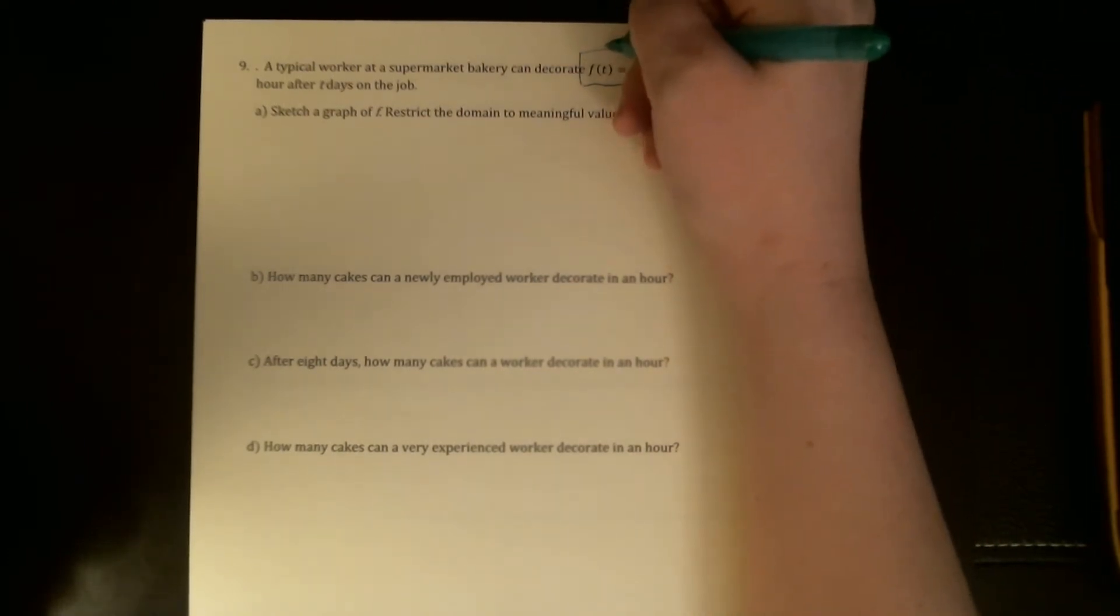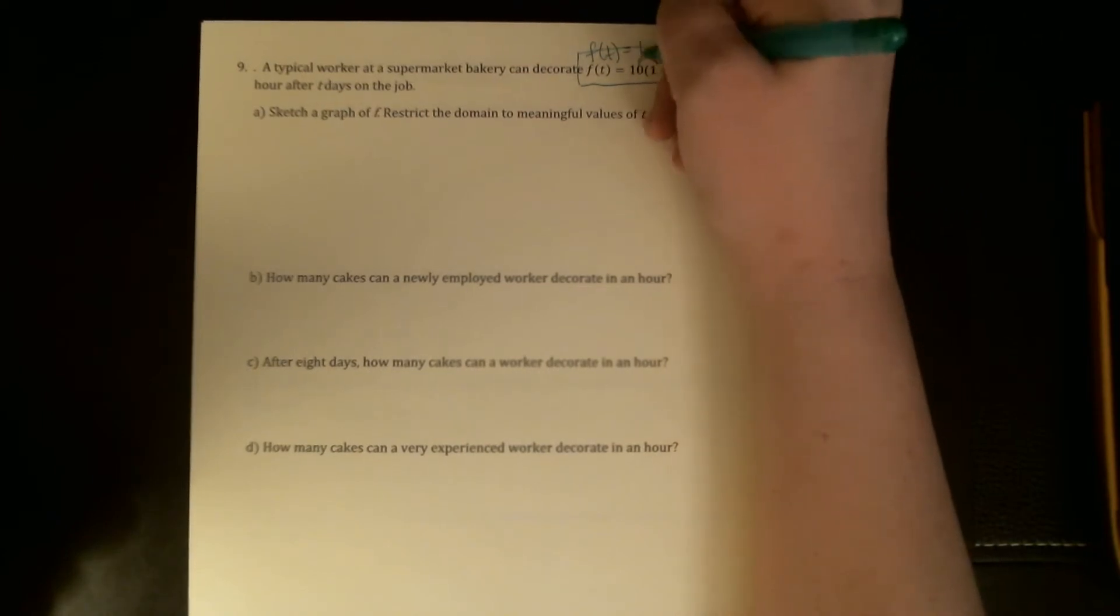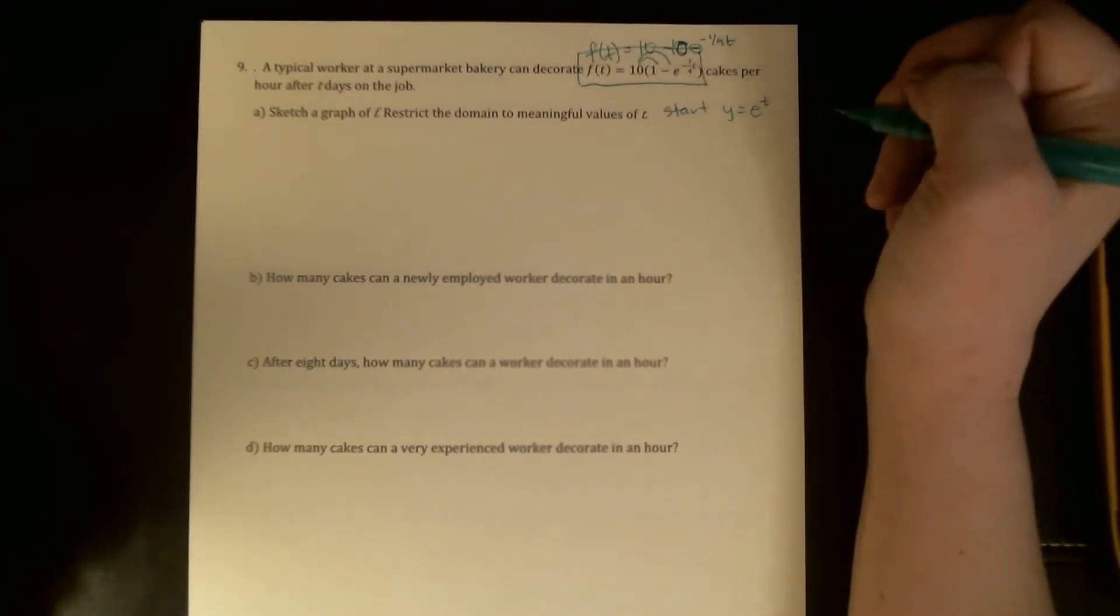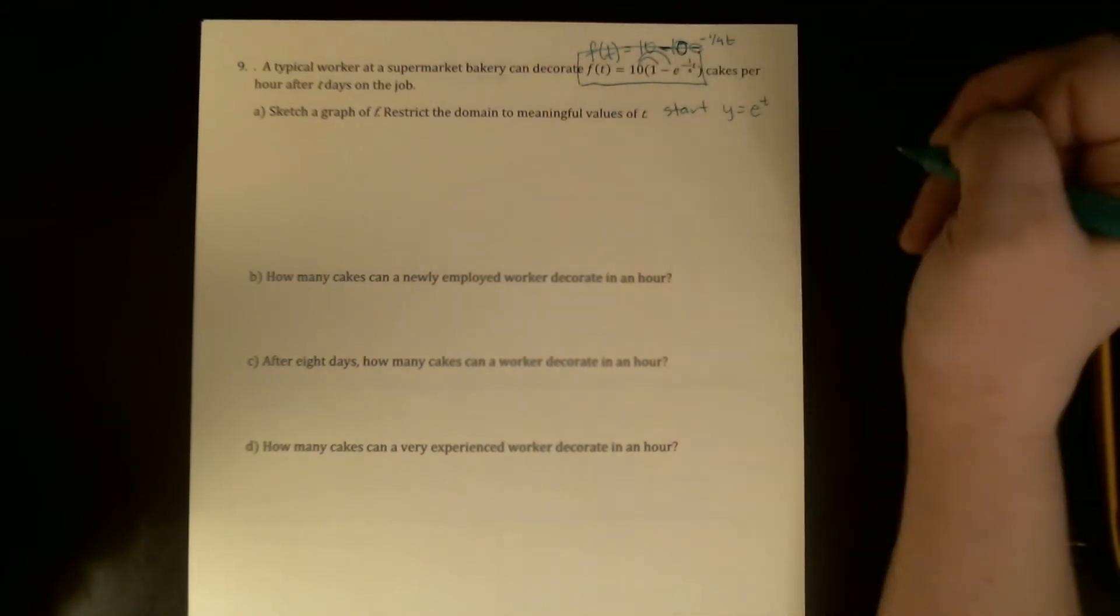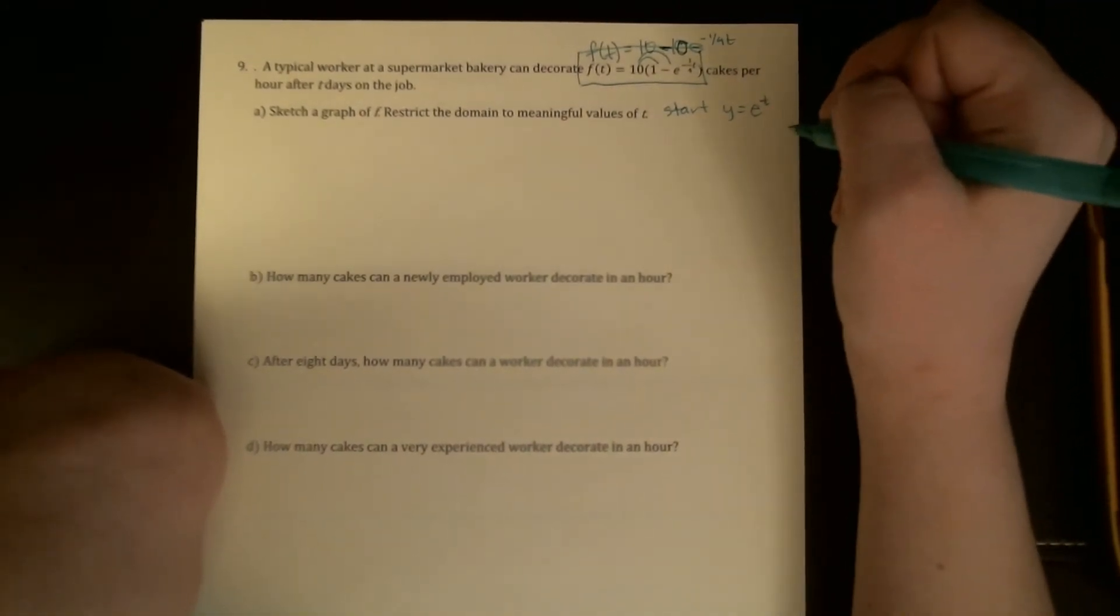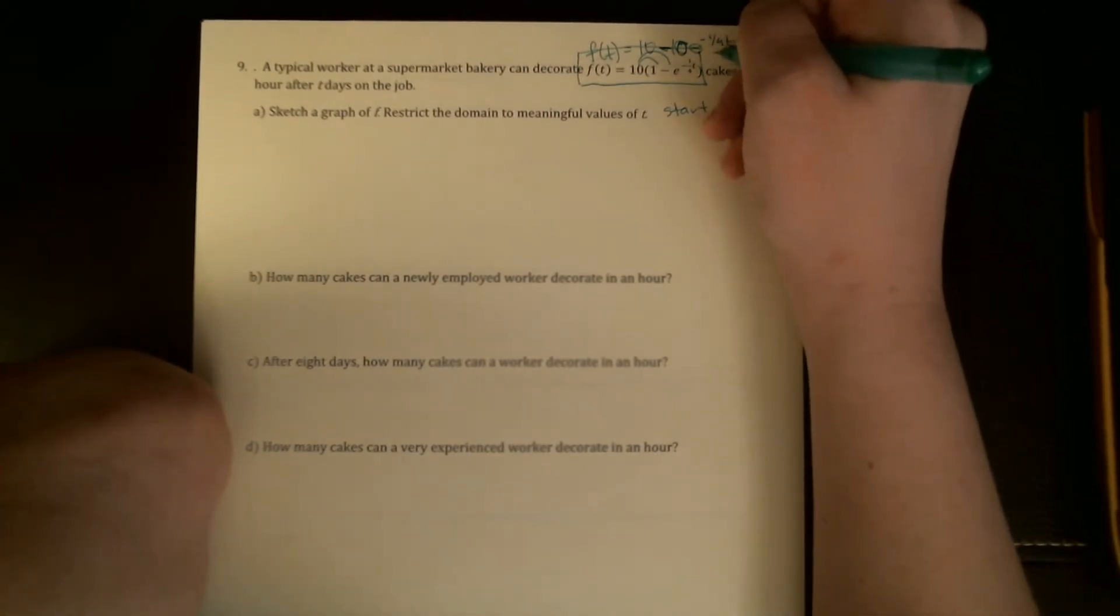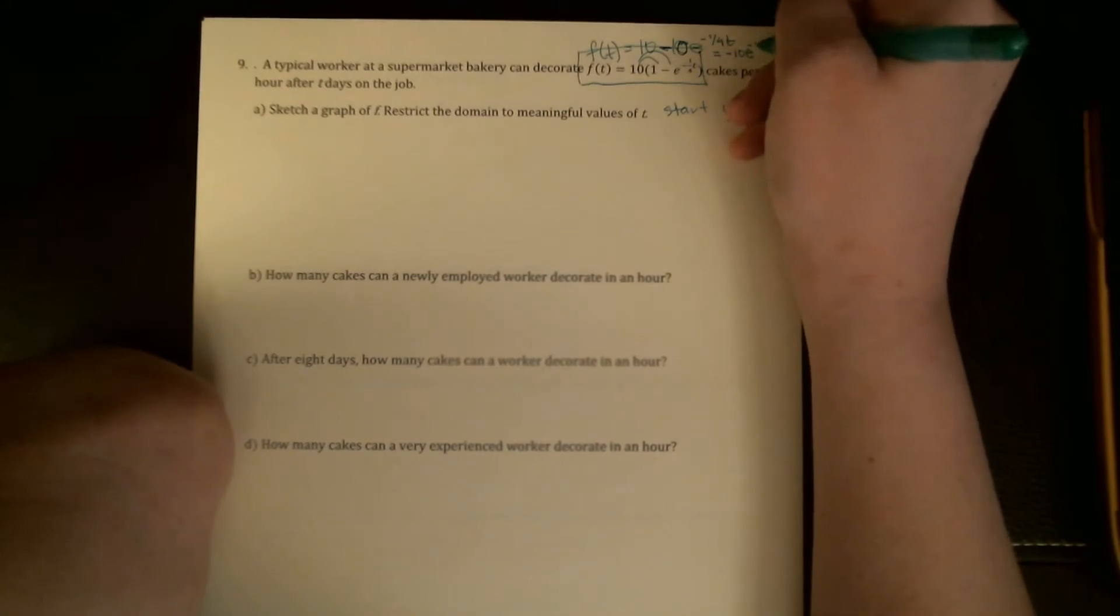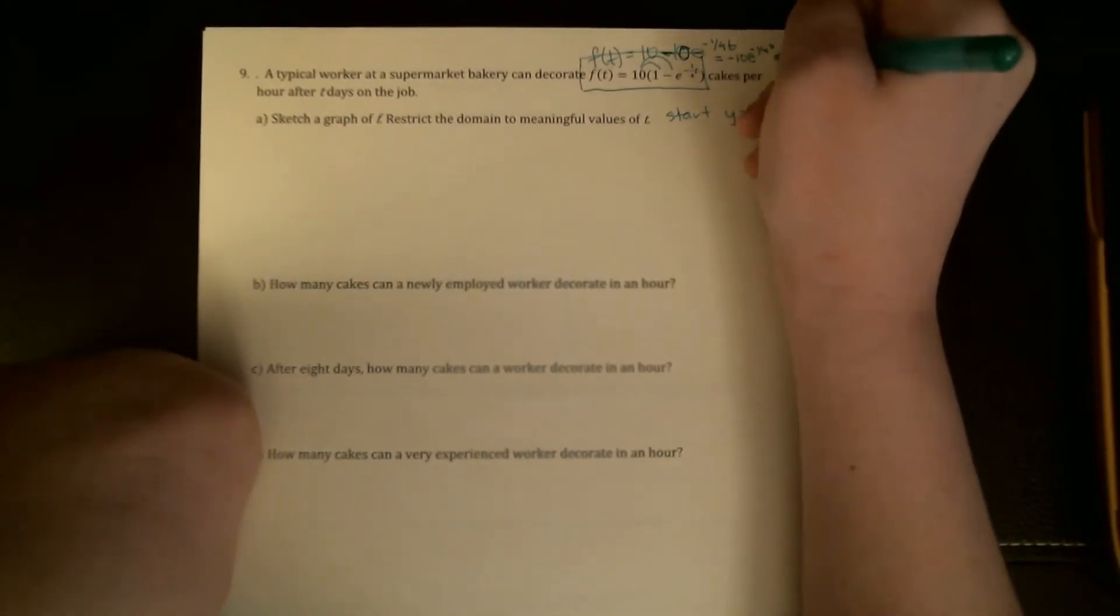Let's see I think I'm actually going to write it up above. Let's say f(t) is equal to 10 minus 10e to the negative one-fourth t. This is the same as negative 10e to the negative one-fourth t plus 10.